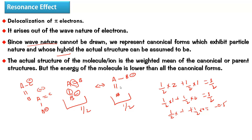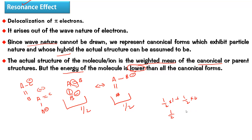The point is that since the actual molecule behaves this way, we need a theory to explain it — that is why we talk about the resonance effect. Resonance effect is basically a theory; nobody has seen it happen. It is just an explanation, a theoretical construct to make us understand why this occurs. It happens in order to gain stability. The actual structure is the weighted mean of the canonical forms, but the energy is lower than any canonical form — it cannot be calculated as simply 50% of one plus 50% of the other. The energy is lower than either. That is the very purpose of resonance: to create additional stability due to the wave nature of electrons.